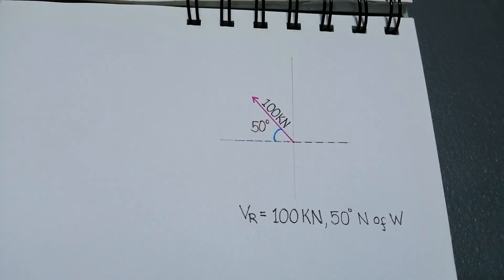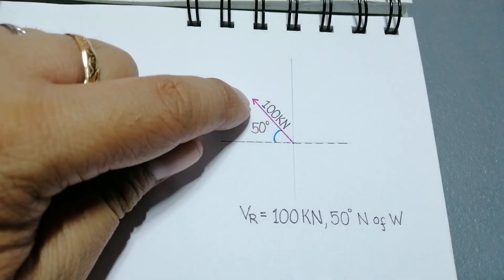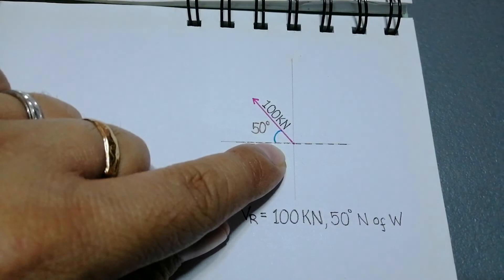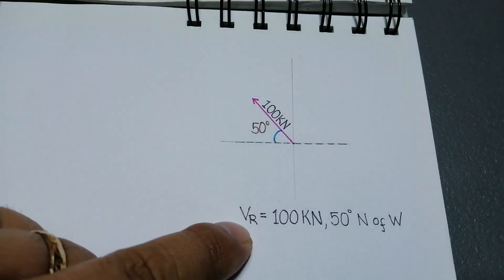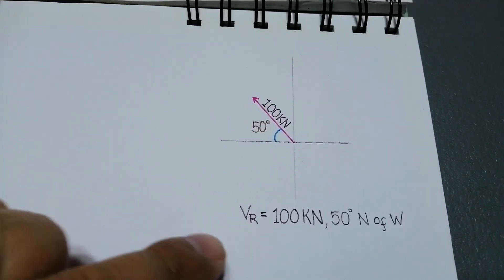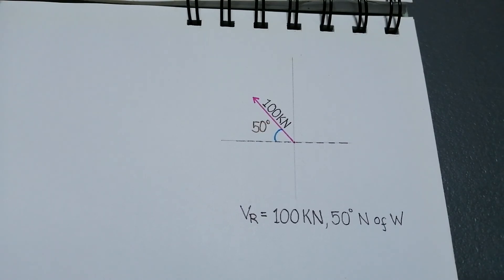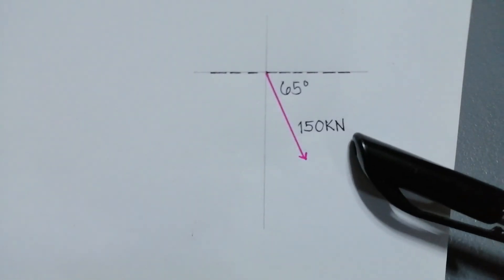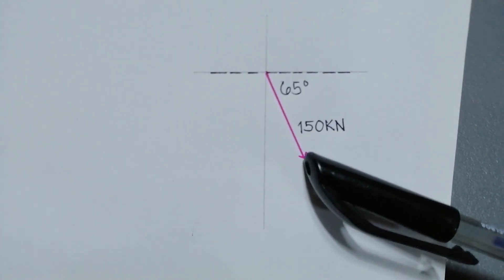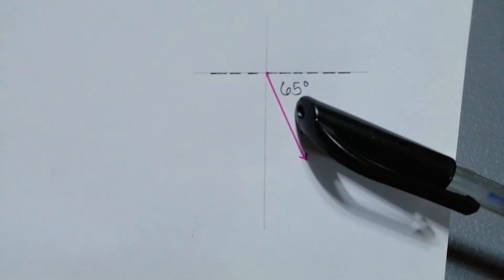Aside from that, we can also apply the concept of reference angle in physics. For example, we have a resultant vector with a magnitude of 100 kilonewtons and a direction, based on the reference angle, of 50 degrees. We can name this resultant vector as 100 kilonewtons with a direction of 50 degrees north of west. Another example: a resultant vector with a magnitude of 150 kilonewtons with a direction of 65 degrees south of east.